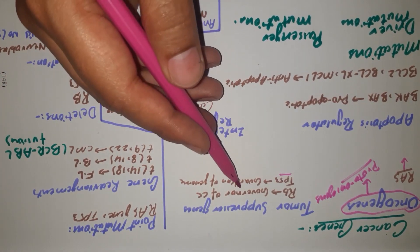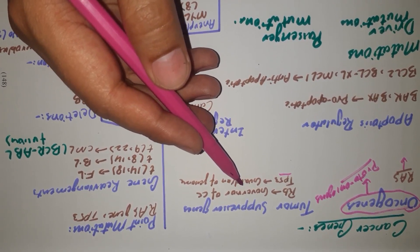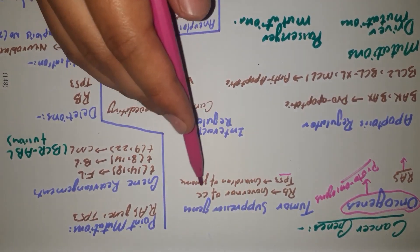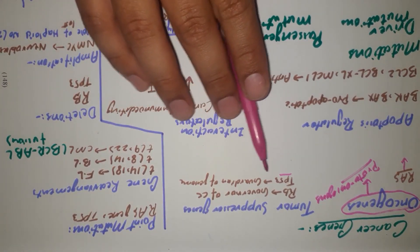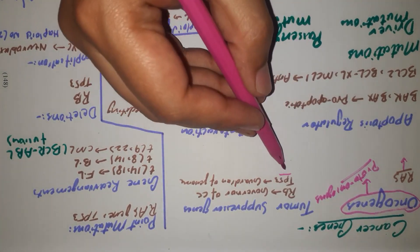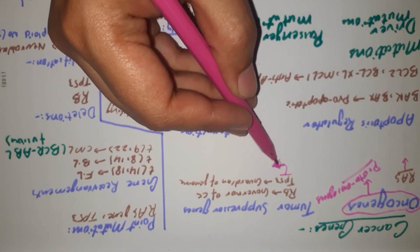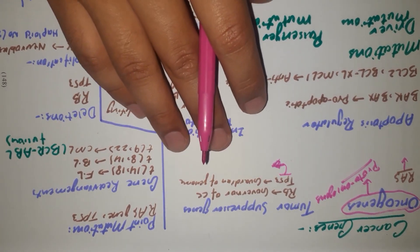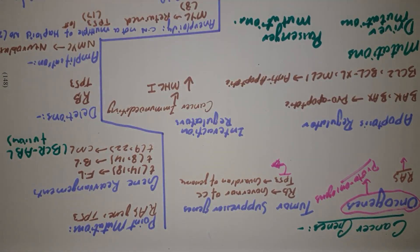Retinoblastoma regulates the cell cycle. If it encounters some imbalance in the cell cycle or some kind of mutation, it arrests the cell cycle — that's why it is called governor of the cell cycle. TP53 is called the guardian of the genome because if there is some kind of mutation inside the DNA, it identifies that mutation and up-regulates the DNA repair mechanisms.